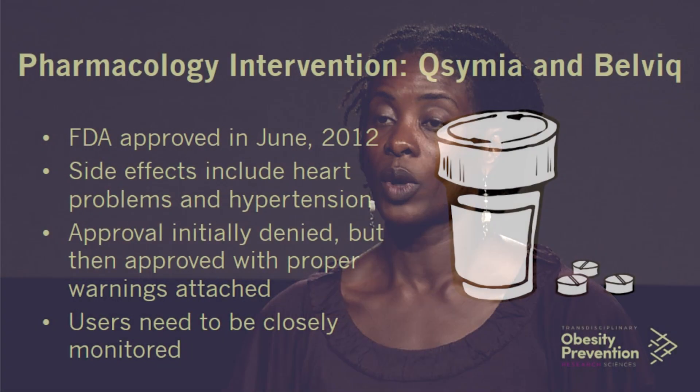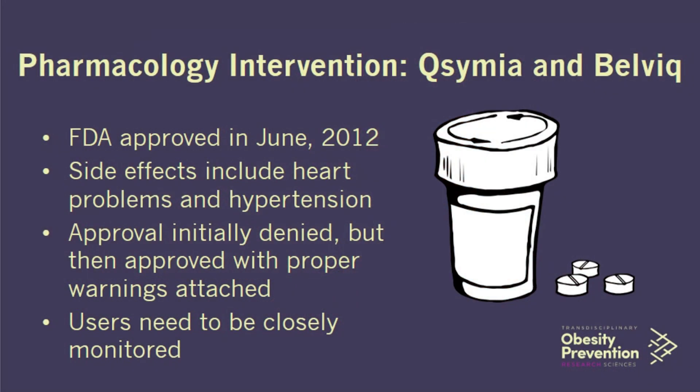Between 2010 and 2012, there were no FDA-approved medications for obesity. Then in June 2012, two drugs were approved: one called Qsymia and the other called Belviq. These drugs do have some side effects, including heart problems and hypertension, and FDA approval was initially denied. However, the FDA subsequently approved them with warnings, and users are supposed to be very closely monitored. Since these drugs are new, we will have to wait a few years to see their benefits as well as their side effects.